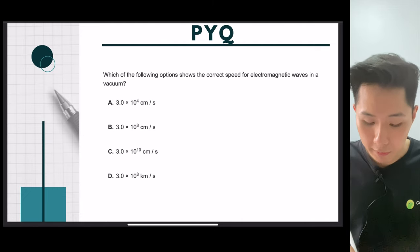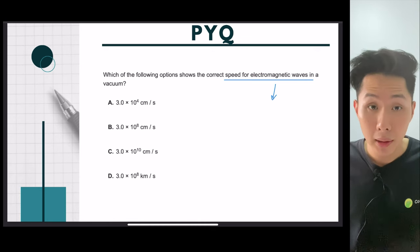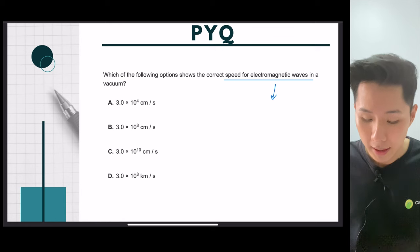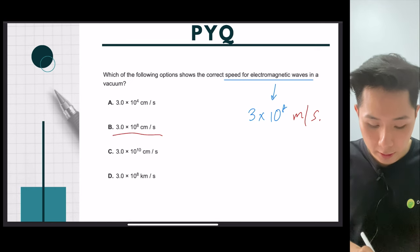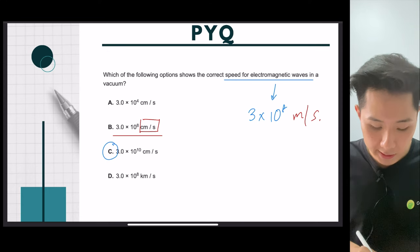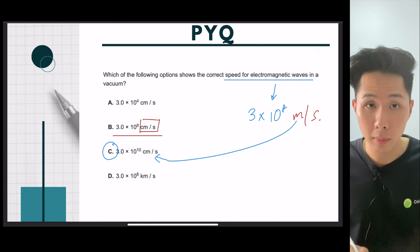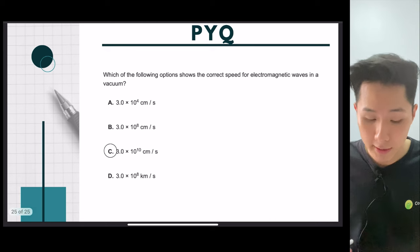Last but not least. Which of the following options show the correct speed for electromagnetic waves in a vacuum? So remember, light is an electromagnetic wave, and all electromagnetic waves act like light. They travel at the same speed, which is 3 times 10 to the power of 8. The keyword here, the unit, meter per second. You might be tempted to choose B, but do know that the unit is not the same. The correct answer here should be C. Because when meter is converted to centimeter, you got 3 times 10 to the power of 10. So C is the correct answer.